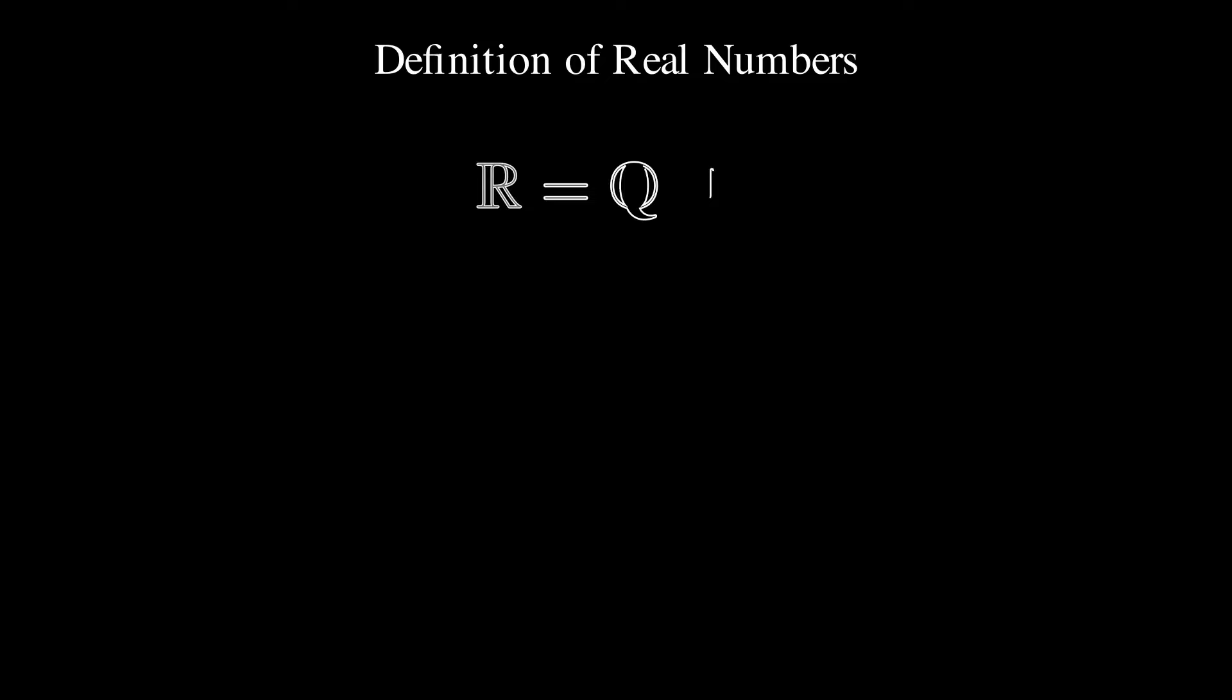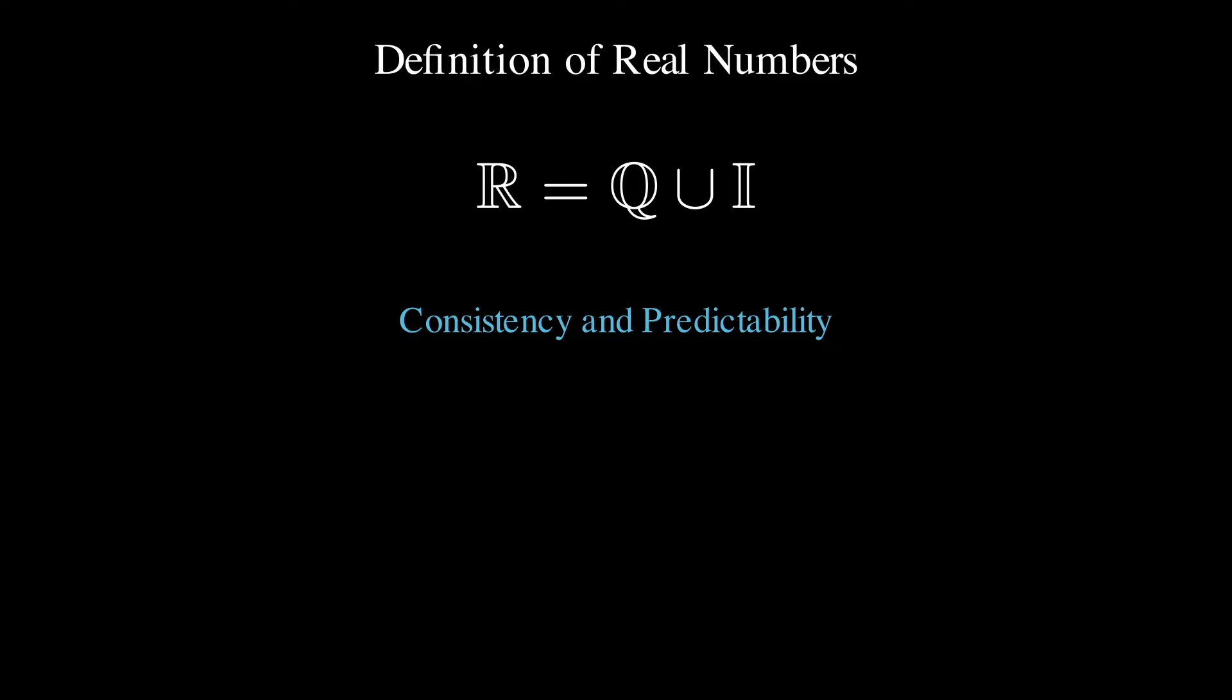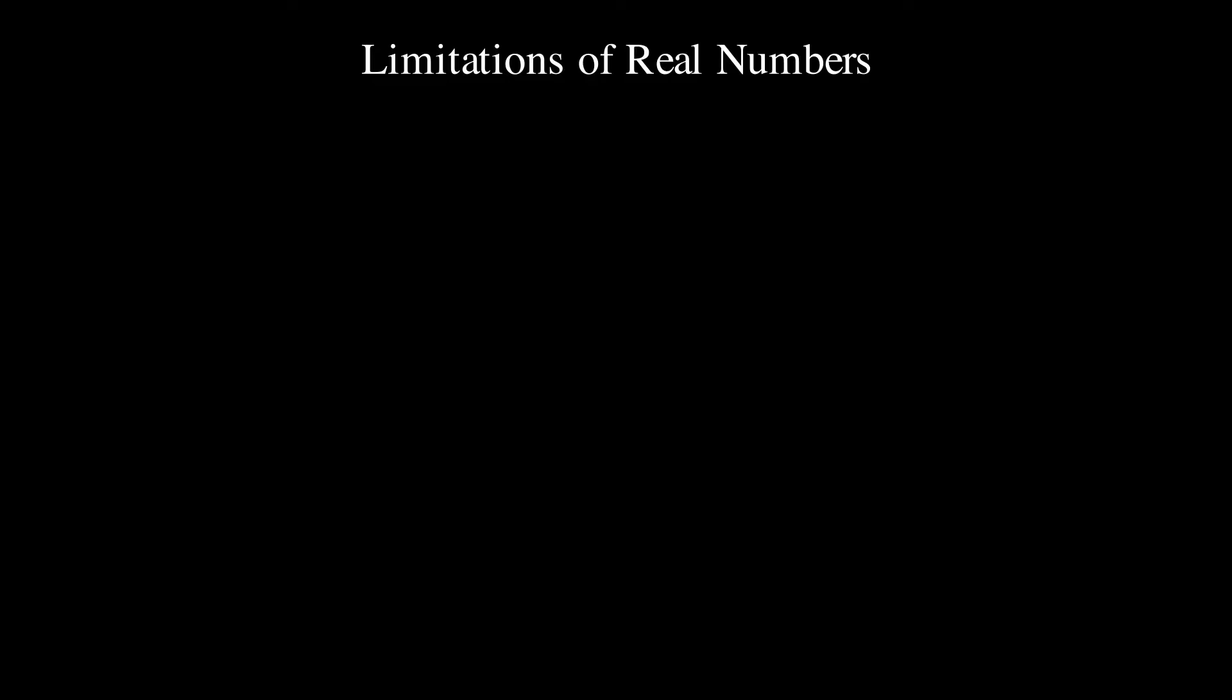The formal definition of real numbers involves advanced mathematical concepts, but these rigorous definitions ensure that real numbers behave consistently and predictably, adhering to the axioms and properties we expect from a complete ordered field. Despite their ubiquity, real numbers aren't without their limitations. For example, they can't represent quantities like the square root of negative one, leading us to explore even more generalized number systems like the complex numbers.